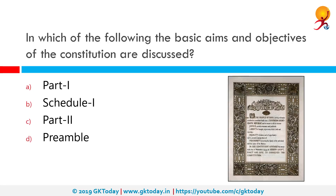In which of the following are the basic aims and objectives of the Constitution discussed? The correct answer is the Preamble. The Preamble to the Constitution of India is a brief introductory statement that sets out guidelines, presents the principles of the document, and indicates the source from which the document derives its authority — meaning the people.